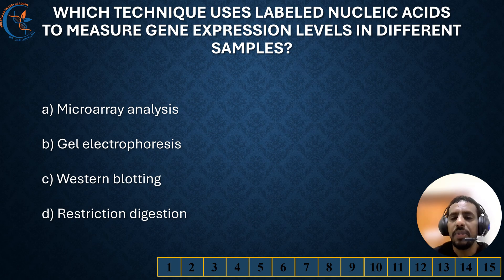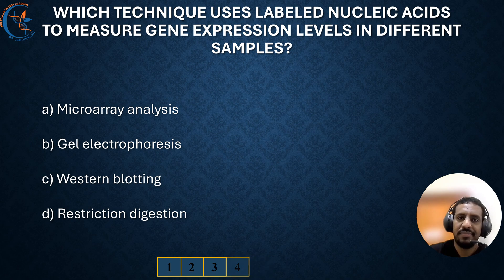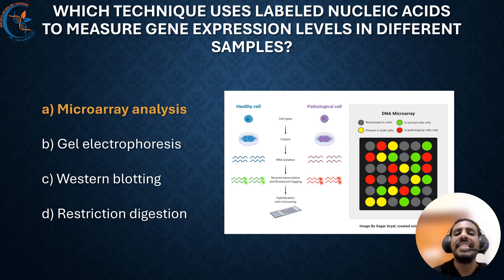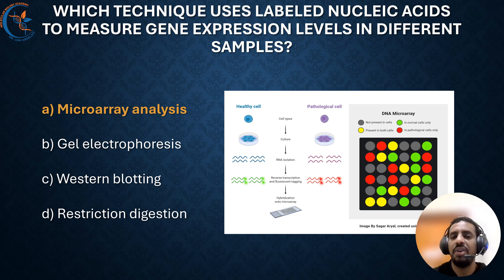Which technique uses labeled nucleic acids to measure gene expression levels in different samples? The correct answer is microarray analysis. Microarray analysis uses labeled nucleic acids to measure gene expression levels across many genes simultaneously. In this method, fluorescent-labeled cDNA or RNA samples are hybridized to a solid surface containing thousands of DNA probes. The fluorescent intensity at each probe spot reflects the expression level of the corresponding gene, allowing researchers to analyze gene activity across different conditions or samples.